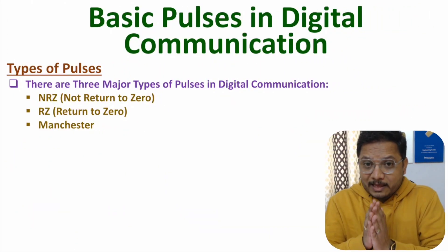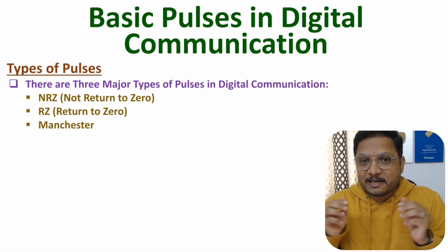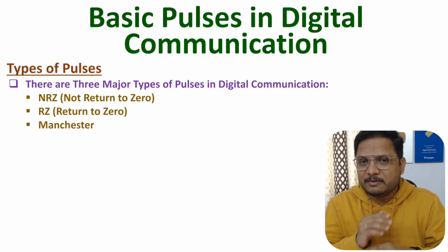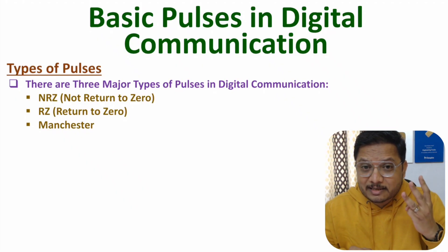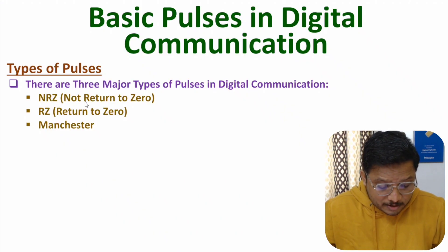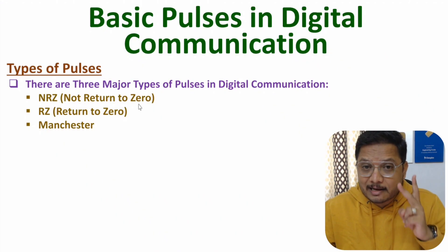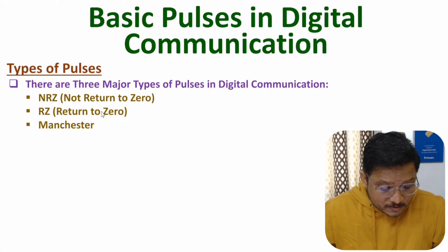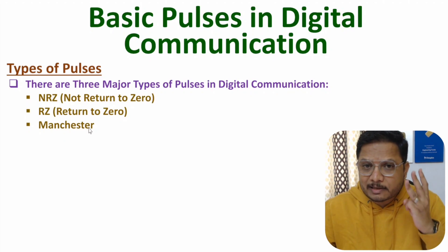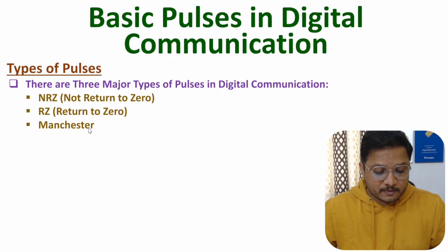Welcome to Engineering Panda Family. In this video I will explain basic pulses in digital communication with great clarity. There are three major basic pulses: first is NRZ (Not Return to Zero), second is RZ (Return to Zero), and third is Manchester. I'll first explain these three pulses and then compare them based on different parameters.